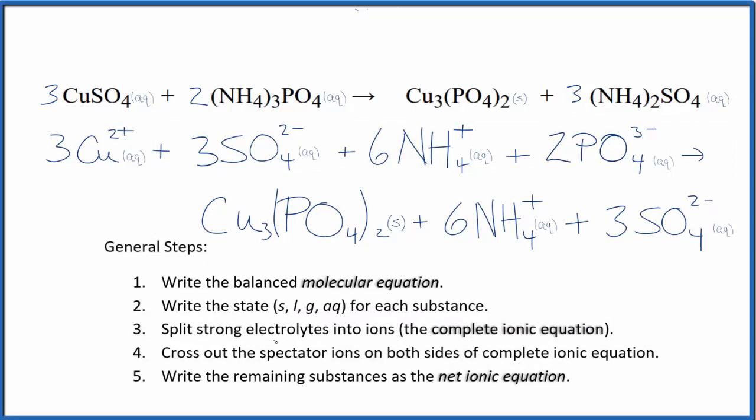Now we can cross out spectator ions. They're on both sides of the complete ionic equation. In the reactants on the top, I see there are three sulfate ions. Also in the products here on the bottom, three sulfate ions. These are spectator ions.